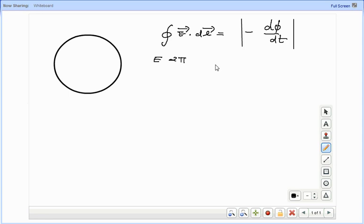E into 2 pi radius equal to d dt of area times magnetic field B naught t square.